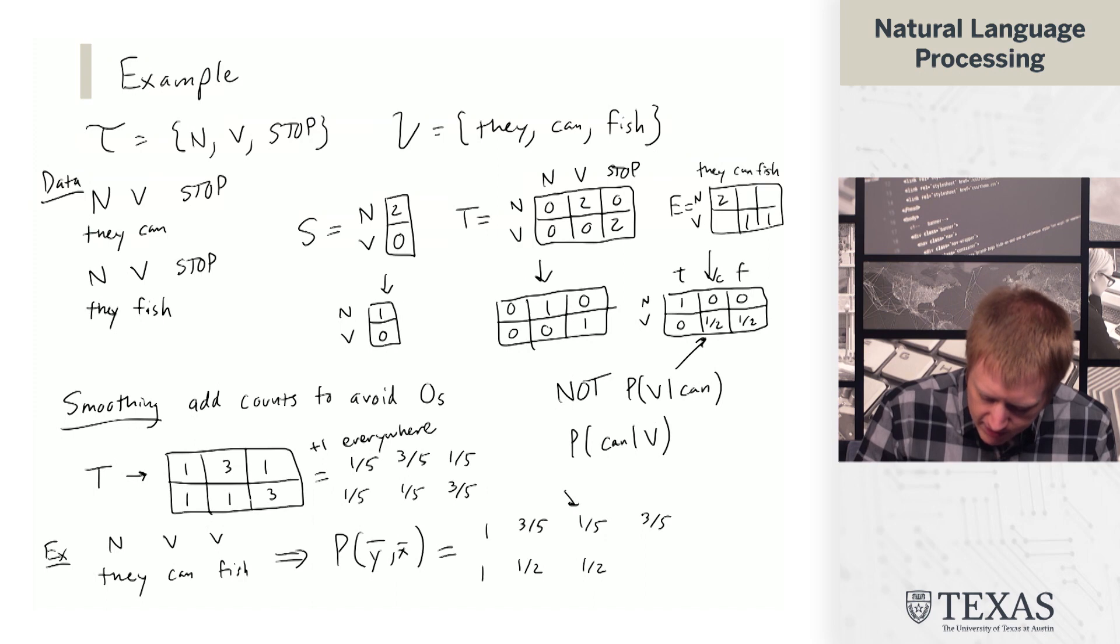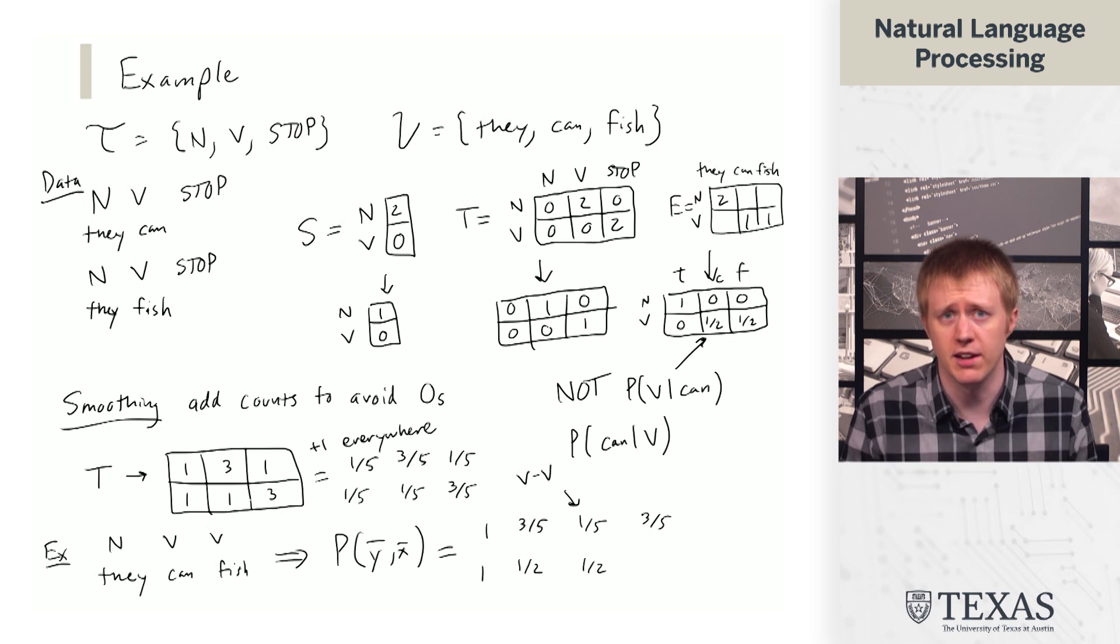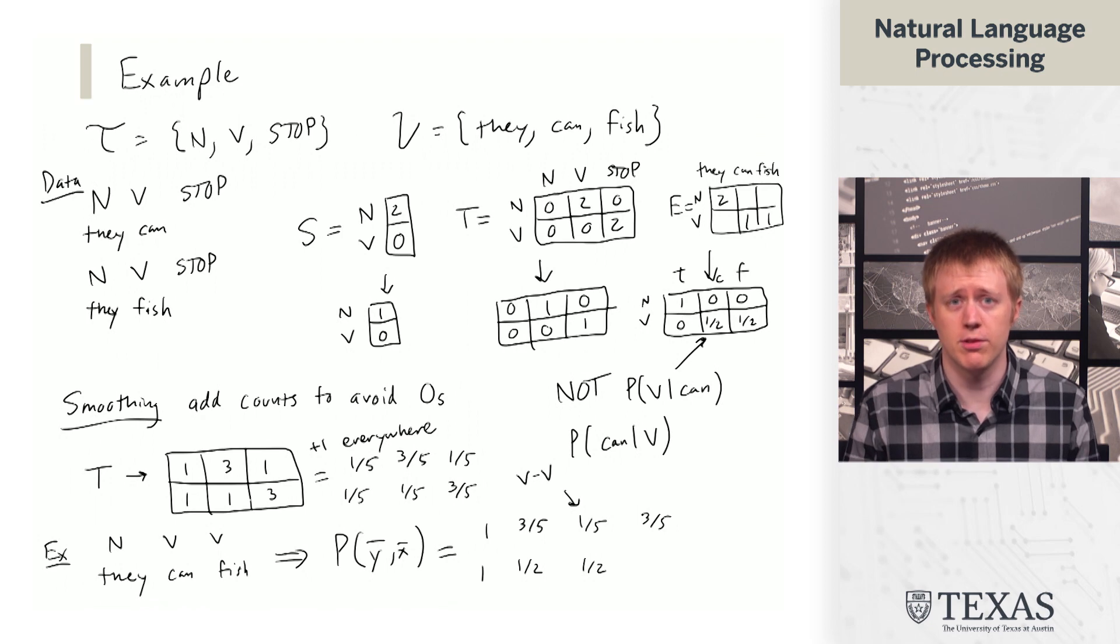And so notice that this v-to-v transition would have had probability zero if we had not done this smoothing. And so even though we only smoothed the transitions, it turns out it was enough for our HMM to be able to say that they can fish is at least something that I can imagine seeing and assign it non-zero probability.